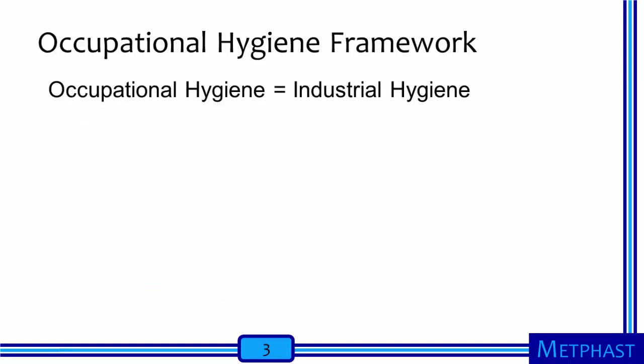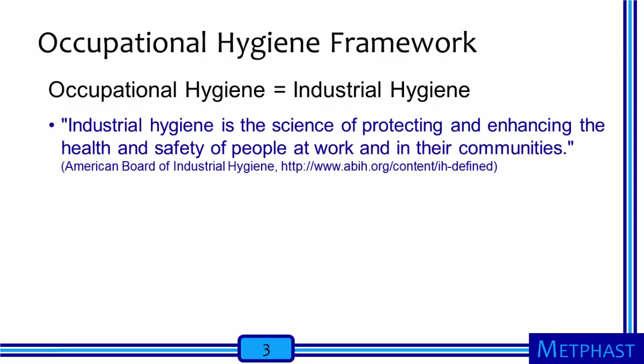As we begin to discuss the Occupational Hygiene Framework, I should make the point that occupational hygiene is a term used interchangeably with industrial hygiene. Occupational Hygiene is used more frequently in Europe and other parts of the world, whereas industrial hygiene is used more commonly in the United States. The American Board of Industrial Hygiene defines industrial hygiene as the science of protecting and enhancing the health and safety of people at work and in their communities.